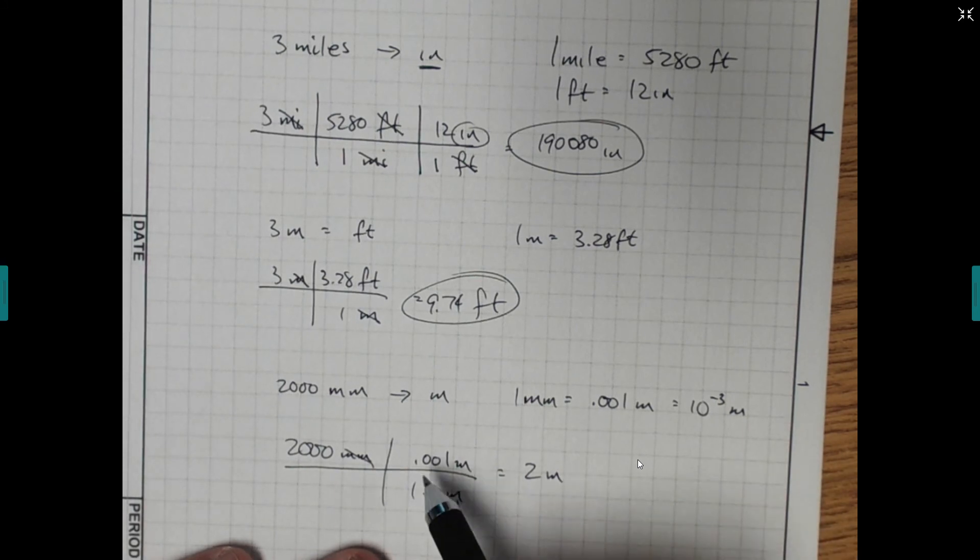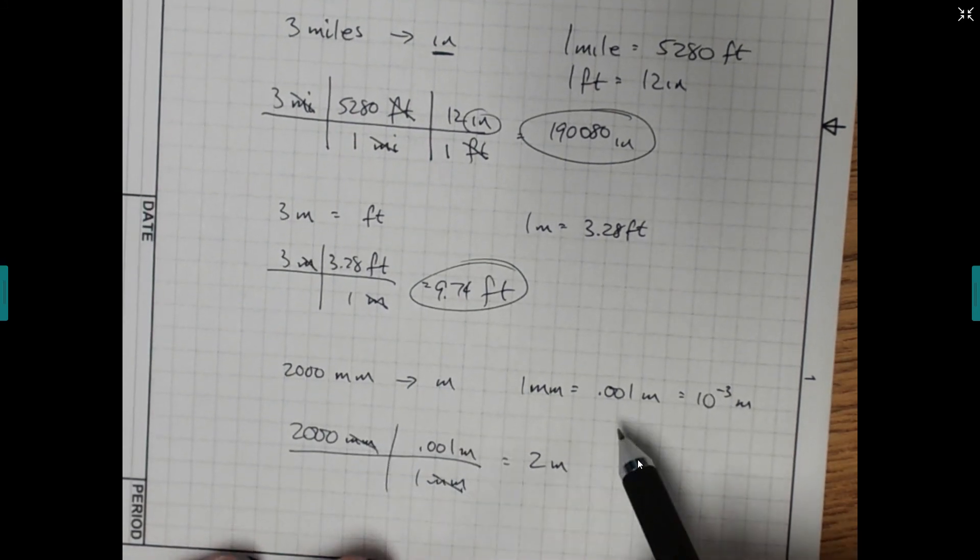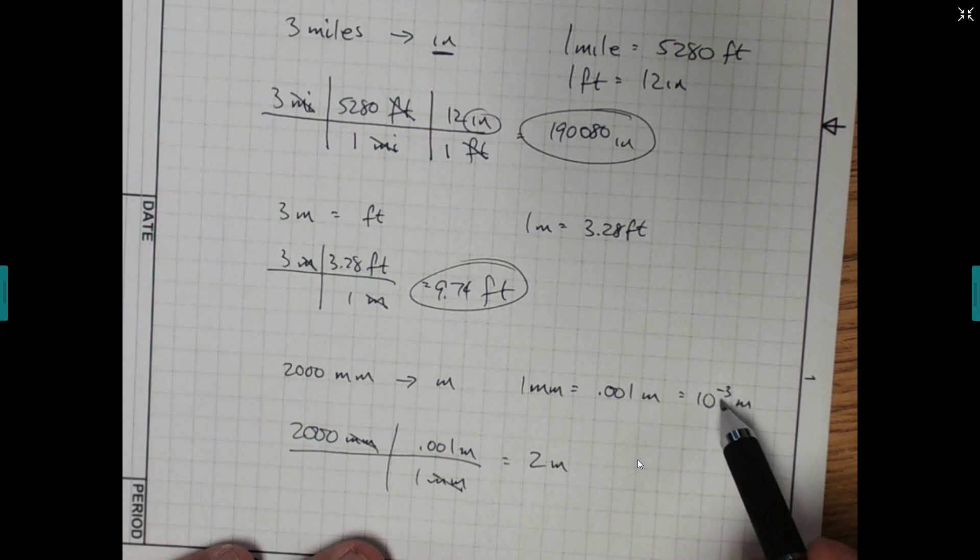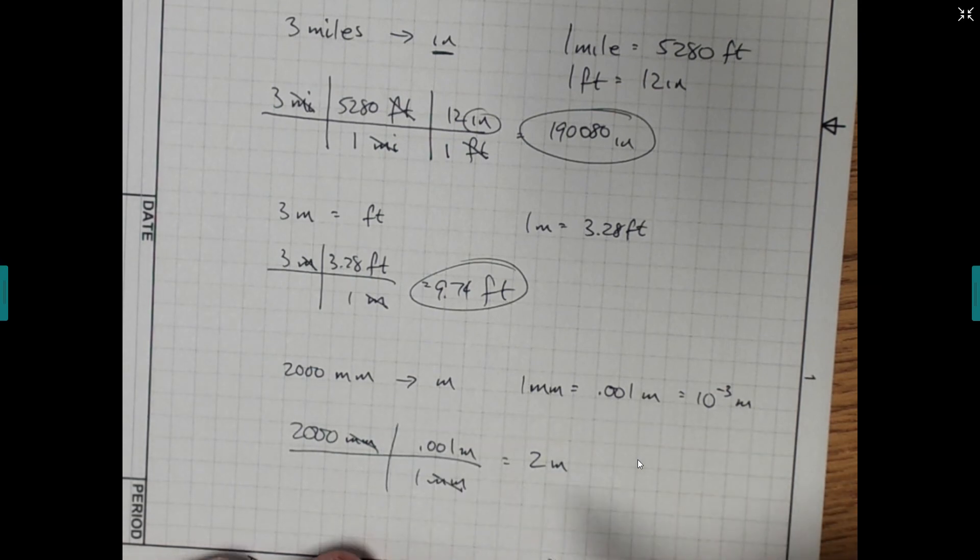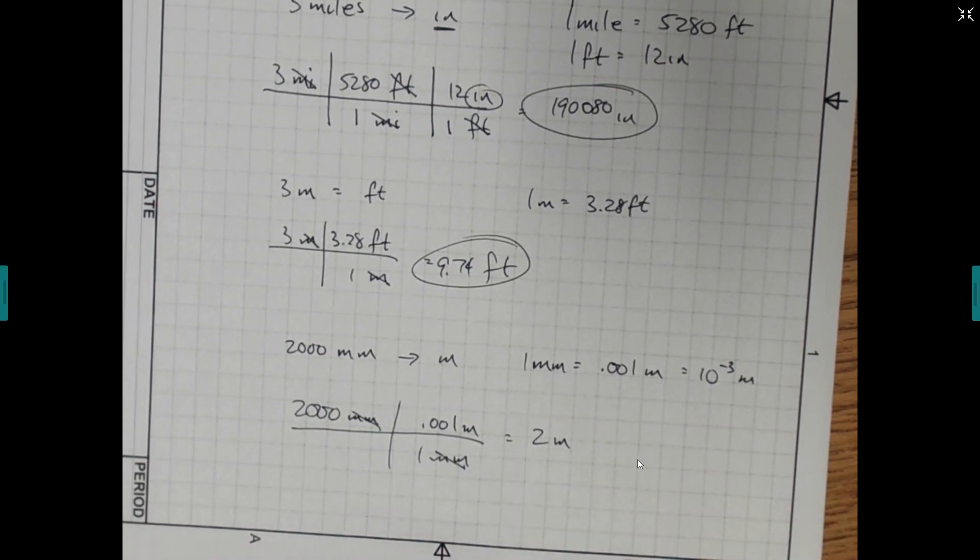So it's the same thing. A lot of times with metric, we don't have to do this. Metric is easier because it's all base 10. And so you can see we're just moving our decimal these three places. It's just like scientific notation where you're just moving your decimal back and forth. And really, that's all there is to it. Thank you.